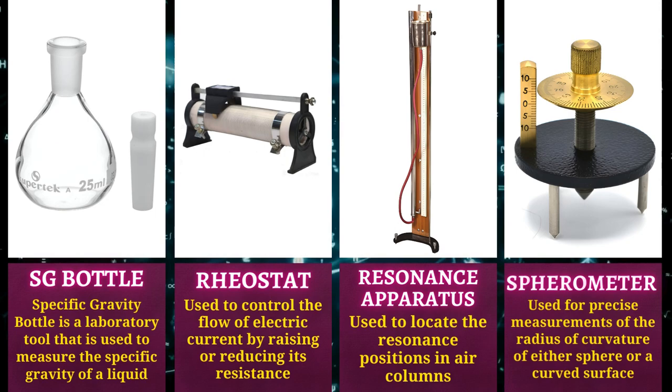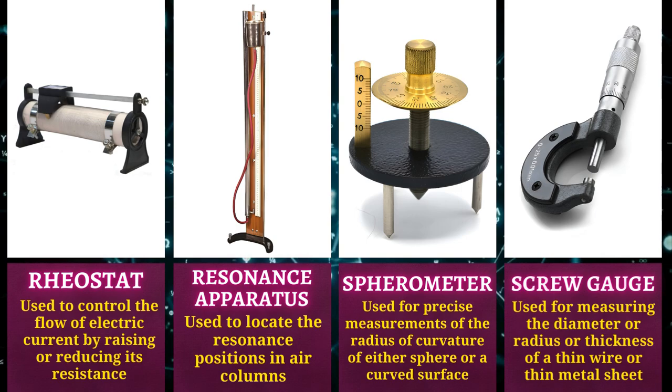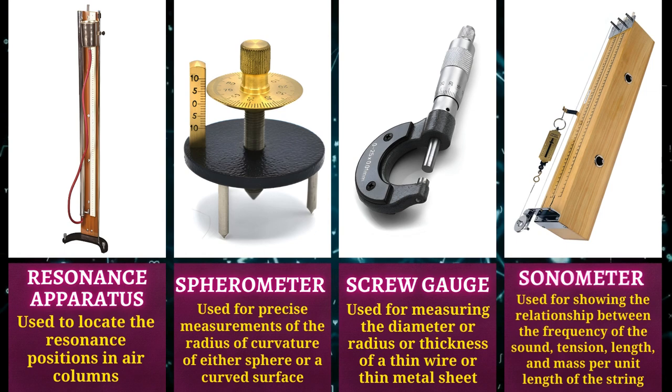Spherometer is used for precise measurements of the radius of curvature of either sphere or a curved surface. Screw gauge is used for measuring the diameter or radius or thickness of a thin wire or thin metal sheet.